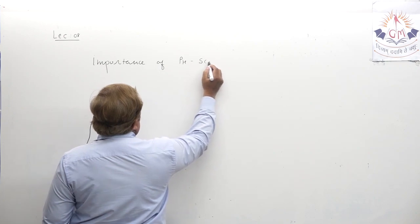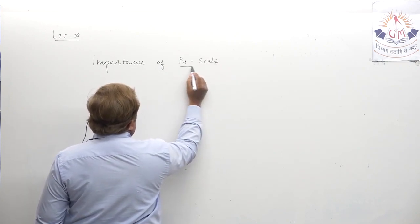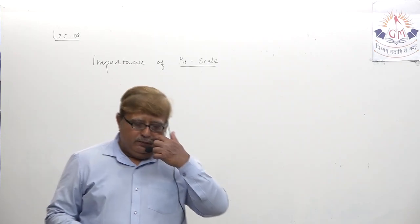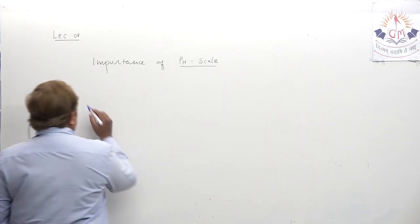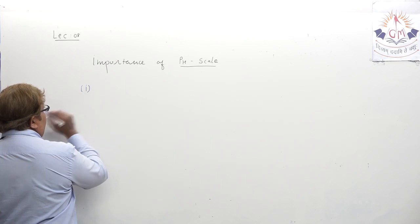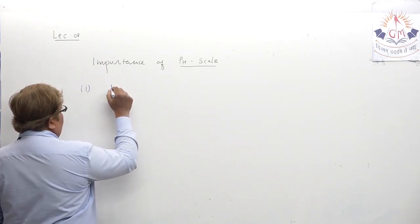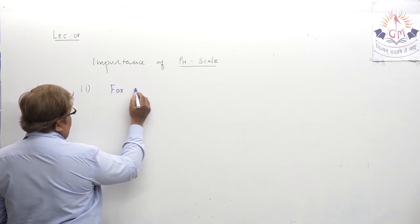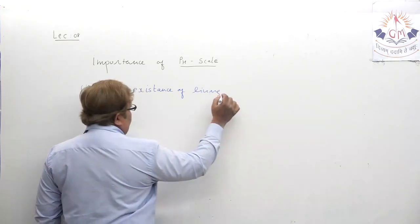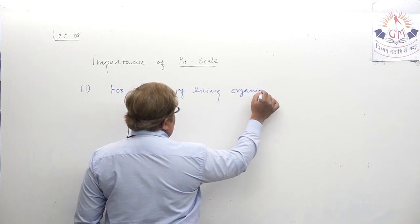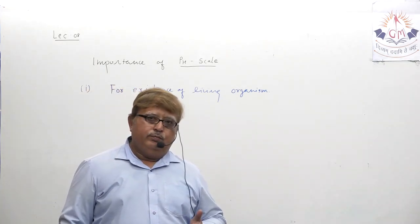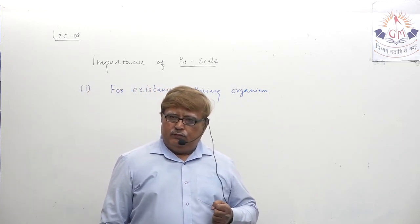Let us try to understand the importance of pH scale for various aspects of life. We will discuss one by one. The first aspect: importance of pH for the existence of living organisms.